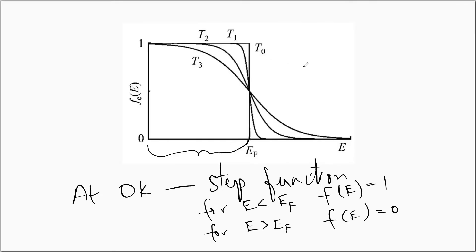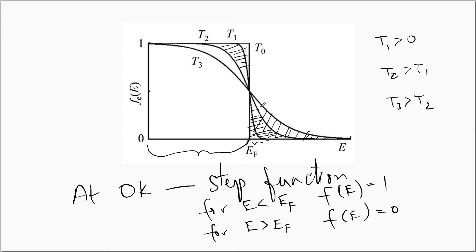As the temperature increases, say T1 greater than 0, the Fermi function shape changes from a step to a smoother function — the sharp edge becomes a smooth edge, and energy levels above E_F start to become occupied. If the temperature is increased further to T2 greater than T1, more energy states above E_F are occupied by electrons. For T3 greater than T2, more and more electronic states above E_F are occupied as the temperature is increased.